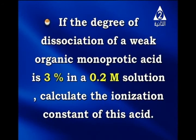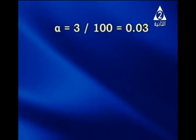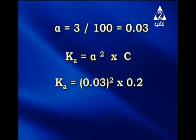Problem 5: If the degree of dissociation of a weak organic monoprotic acid is 3% in a 0.2 molar solution, calculate the ionization constant Ka. Solution: alpha = 3/100 = 0.03. By Ostwald's law: Ka = alpha² × c = (0.03)² × 0.2 = 1.8 × 10⁻⁴.